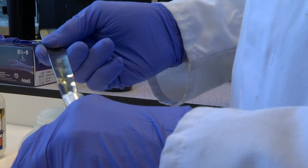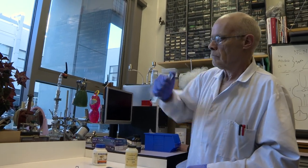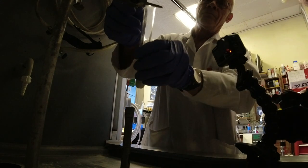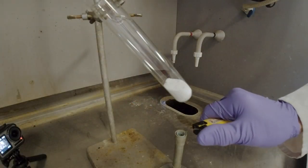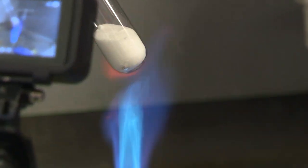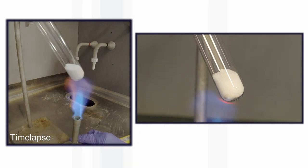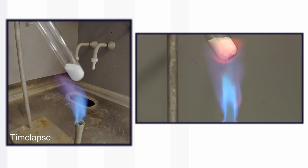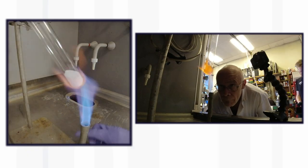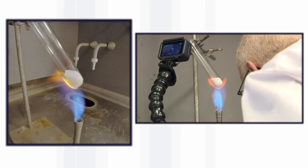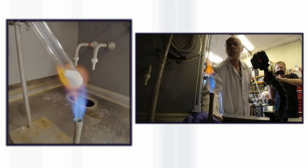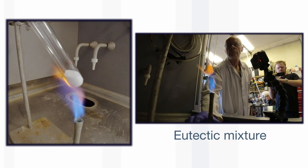This in itself is quite difficult because the melting point of sodium chloride is higher than the melting point of a test tube. However, if you mix it with potassium chloride, you get a mixture which melts at a lower temperature than either pure sodium chloride or pure potassium chloride. It's a so-called eutectic mixture.